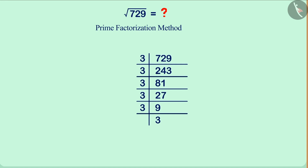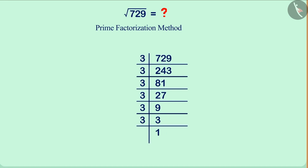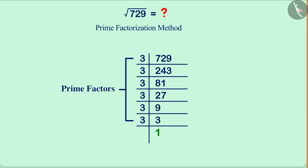Now, we get the number 3 in the last row of the second column, which is a prime number, which has only two factors — the numbers 1 and 3 — which we mark like this. All the prime factors of the number 729 are written in the first column, and number 1 is the remainder in the last row of the second column, indicating that the process is over.